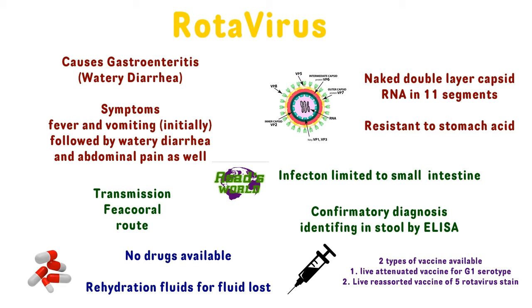The infection is limited to only the small intestine and it causes watery diarrhea. Your symptoms initially include fever and vomiting, and then it will be followed by watery diarrhea and abdominal pain as well.